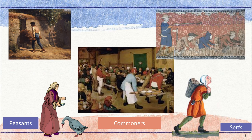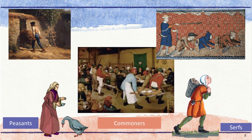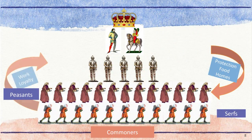Serfs led similar lives to the peasants, but were more like slaves because they were not paid for their work. They were the lowest social class in the feudal system. Serfs and their families were tied to the land, which meant they could not leave without permission, and they stayed there even if the land was sold or given to another noble or knight. Serfs were mostly uneducated and unskilled. Commoners' nobles kept them safe from enemies, provided them homes, and allowed them to keep small amounts of food for their services, but they did not usually own land or businesses.